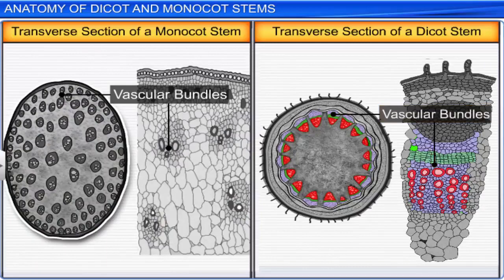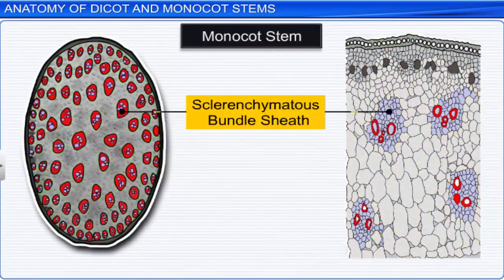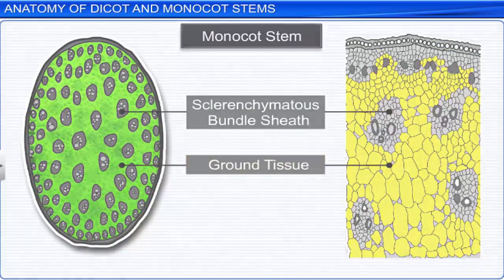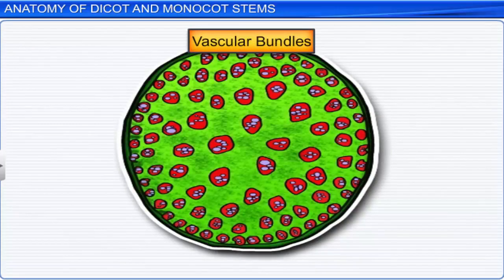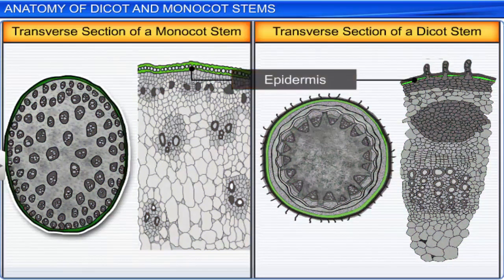In a monocot stem, each vascular bundle is surrounded by a sclerenchymatous bundle sheath and a parenchymatous ground tissue. Moreover, the vascular bundles on the periphery are smaller compared to the vascular bundles in the center. Therefore, the essential differences between a monocot and dicot stem lie in the arrangement of the epidermis, ground tissue, and vascular tissue.